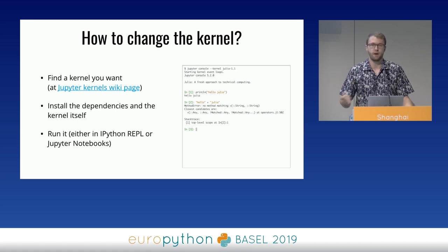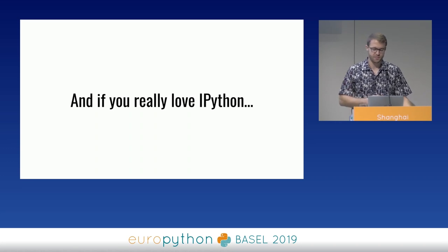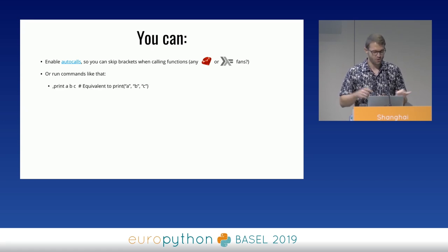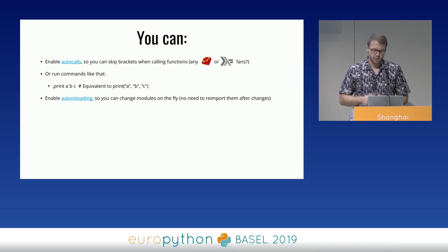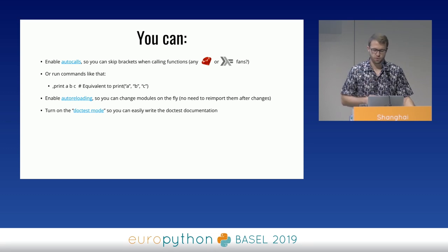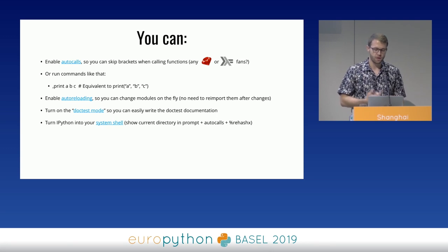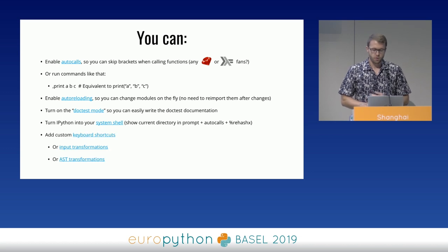And if you really, really love IPython, there's still a bunch of interesting things you can do. You can enable auto calls so you don't need brackets when calling functions, or start a line with a comma so you don't even need quotes around parameters. You can enable auto reloading so imported modules update on the fly without reimporting. If you're writing doctests, turn on doctest mode to make copying code from IPython easier. You can use IPython as your shell by changing the prompt to show the current directory, enabling auto calls, and running rehashx for all the aliases. You can also add custom keyboard shortcuts, input transformations, or even AST transformations.